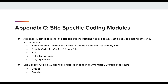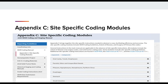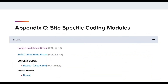The site-specific coding guidelines are located by following this link, and the presentation will focus on two of the sites: breast and bladder. This is a screenshot of Appendix C with the disease sites listed. When you click on the plus sign of the disease site, it will expand the information. When you expand the breast site, you will be able to select and view the coding guidelines. You also have access to the solid tumor rules, the surgery codes, and the extent of disease schema.